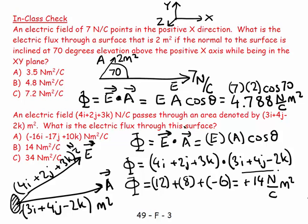That's 14 newtons per coulomb meters squared. Don't forget, dot products or scalar products give you a scalar answer, while cross products or vector products give you a vector answer. Don't get those confused.